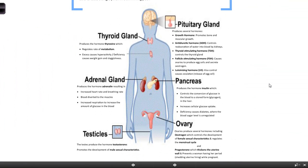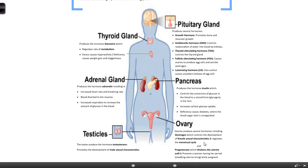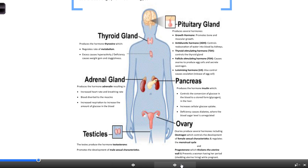These are the major glands - the major parts of the endocrine system that you need to know: the thyroid gland, the adrenal gland, the testicles and ovaries depending on whether we're looking at a male or a female, the pancreas, and the pituitary gland. Let's go through them.